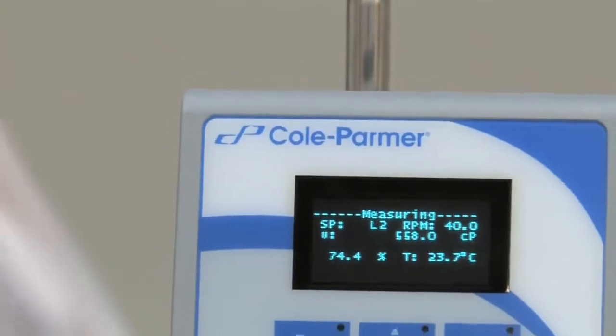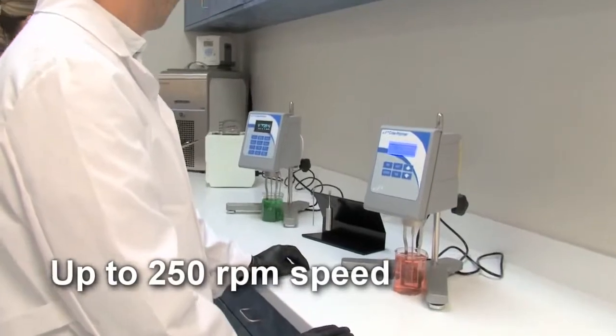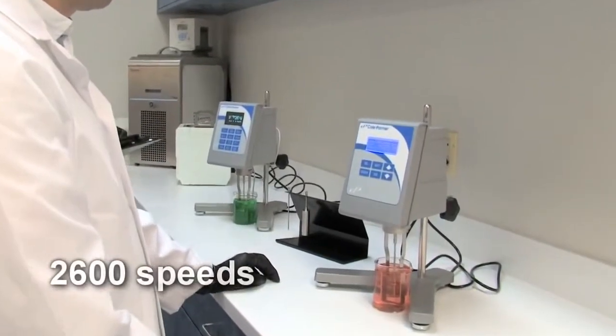The programmable viscometer with temperature probe delivers the highest speed range, up to 250 rpm and 2600 speed selections.